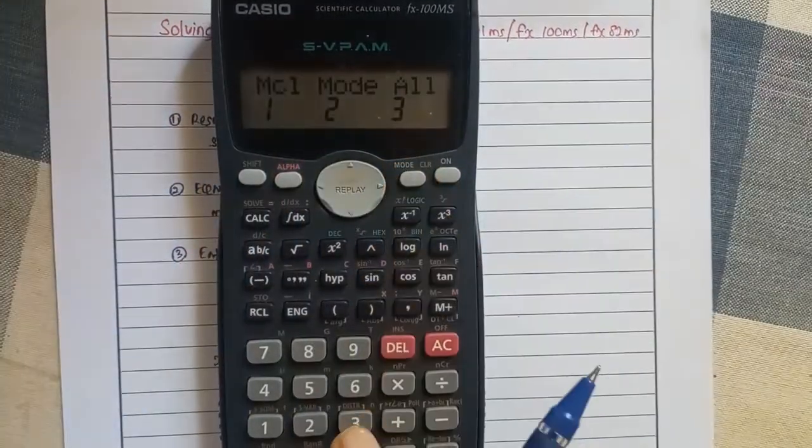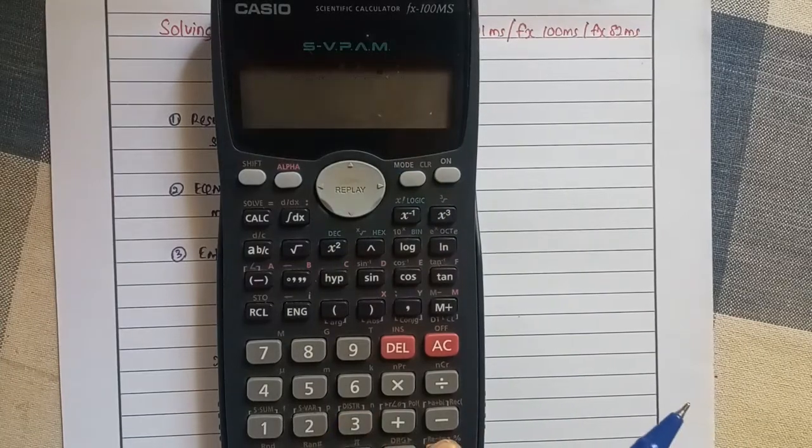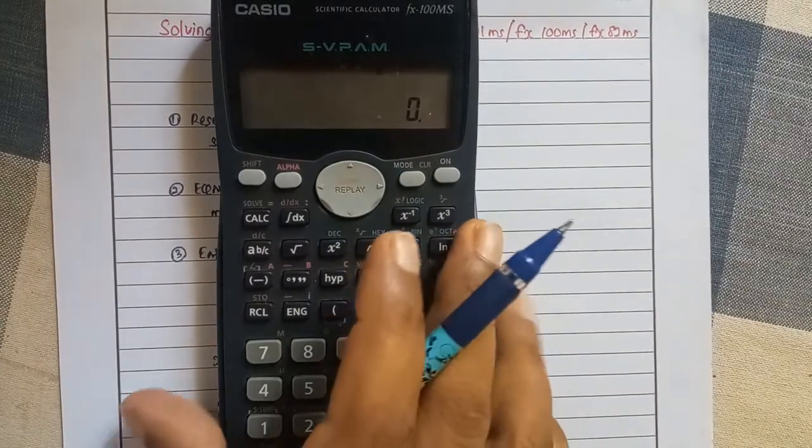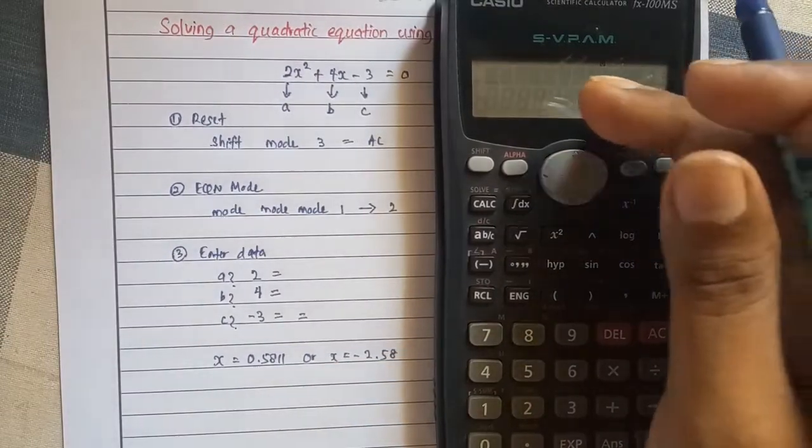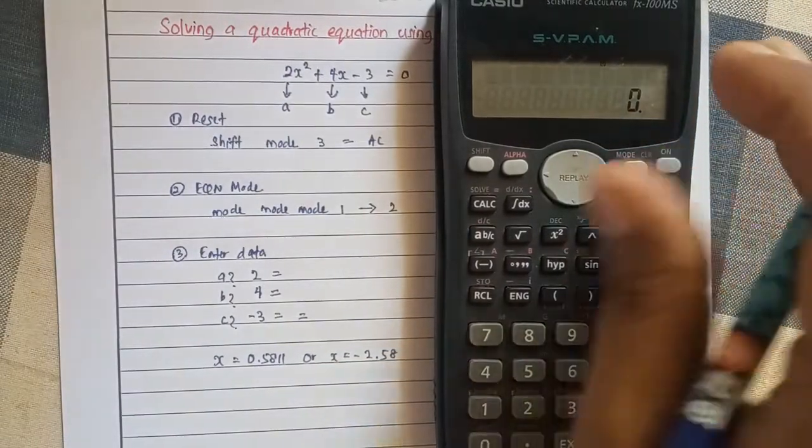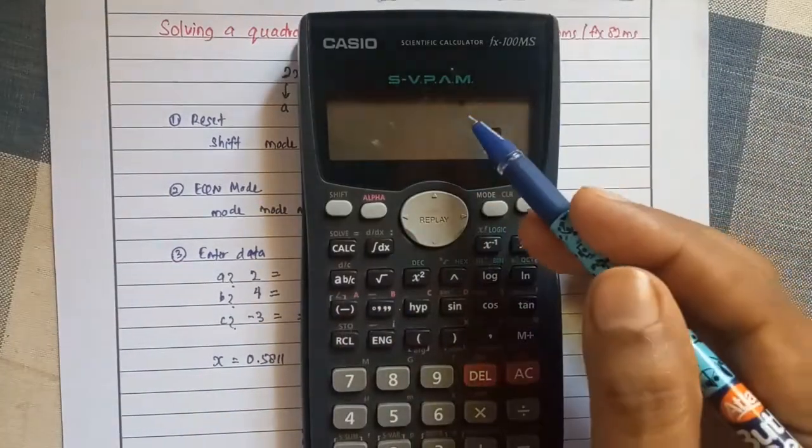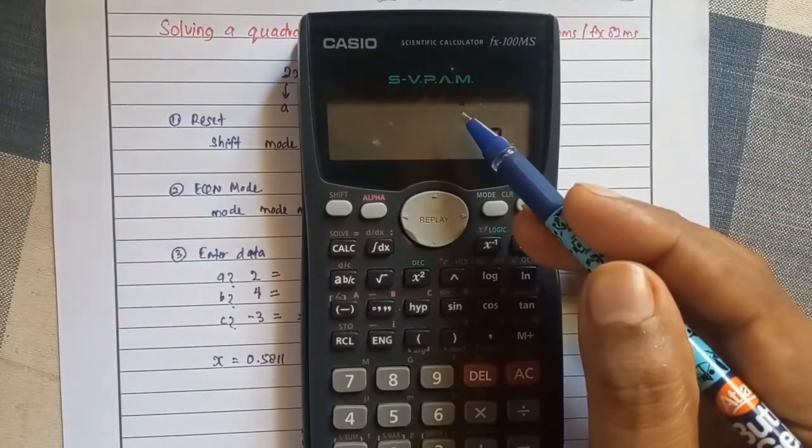Shift, mod, number 3, equal, AC. So once you reset, all the memory that you have already stored in the calculator memory will wipe out and you should be able to see only letter D on your calculator display.